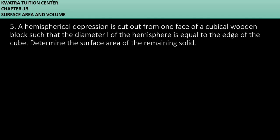Determine the surface area of the remaining solid. So they have given that we have a cube and we are taking out a hemispherical depression. After that we have to find the surface area of the remaining solid. So first try to understand this, what is given?